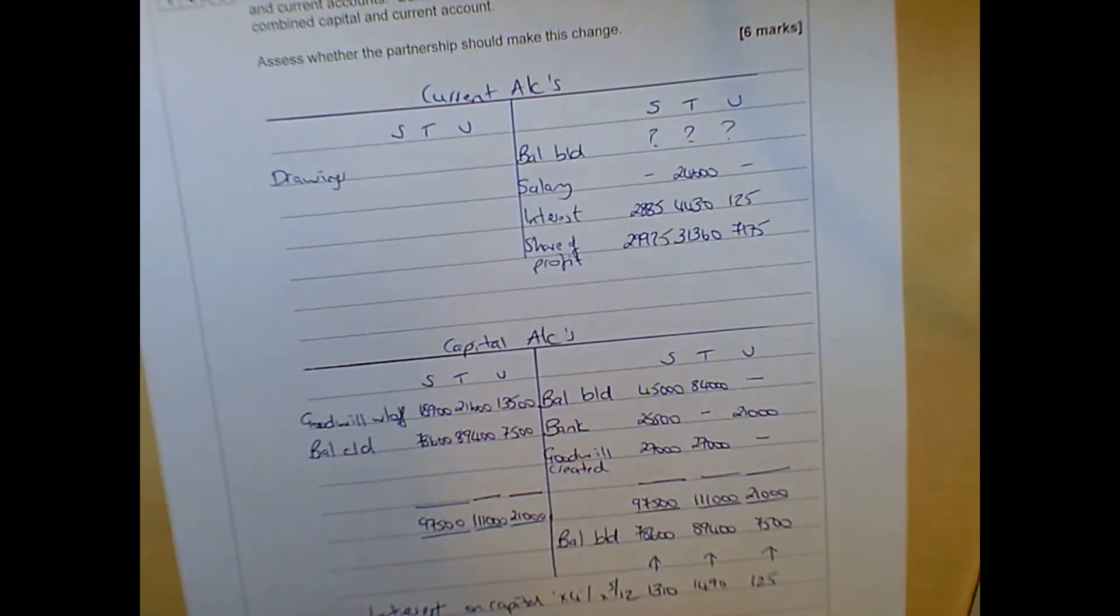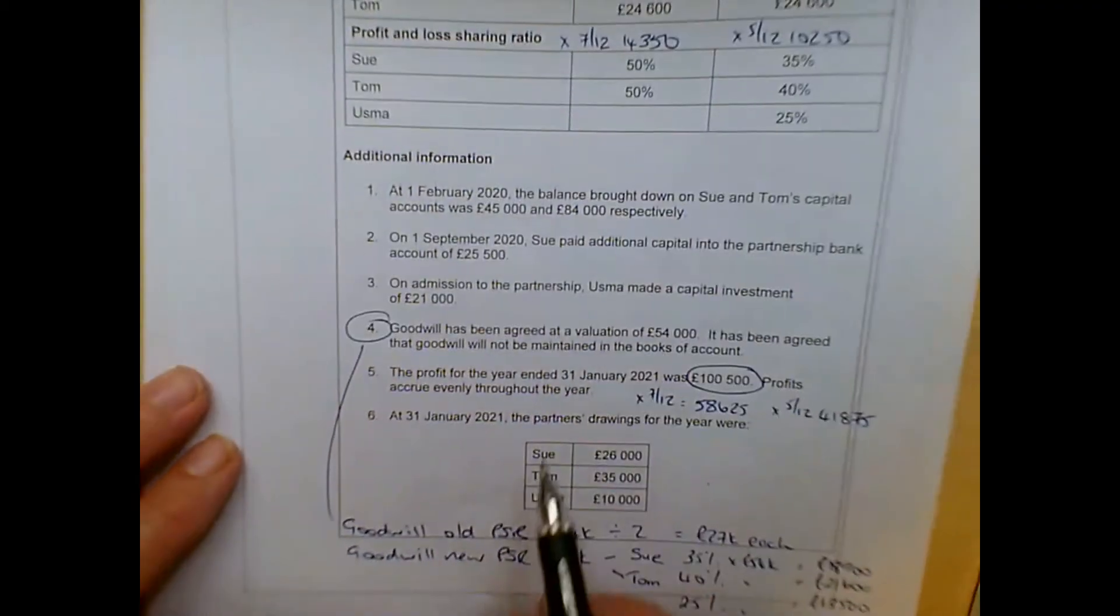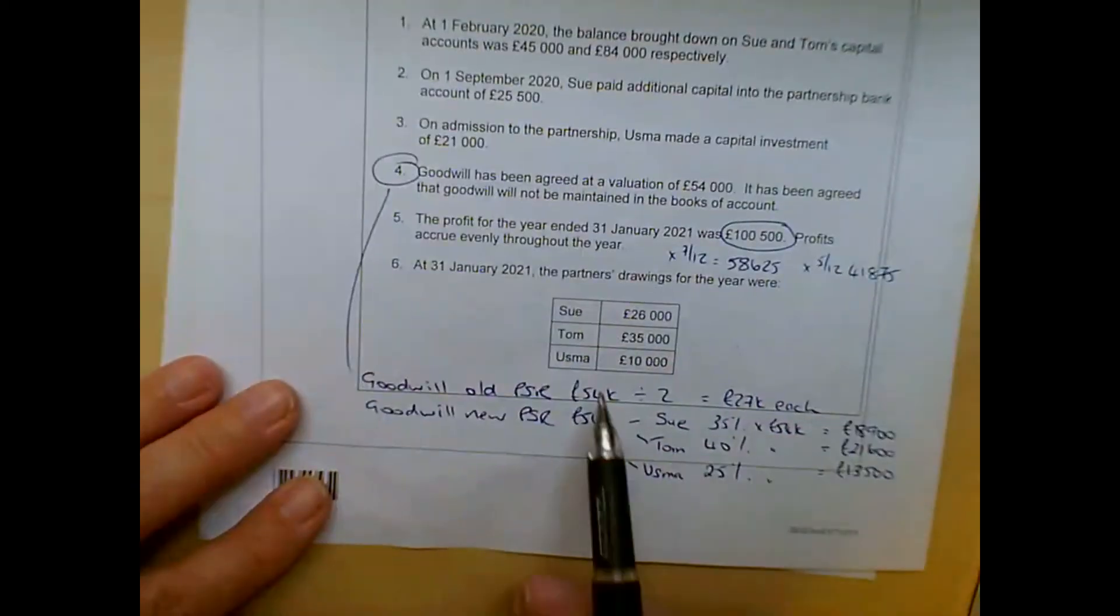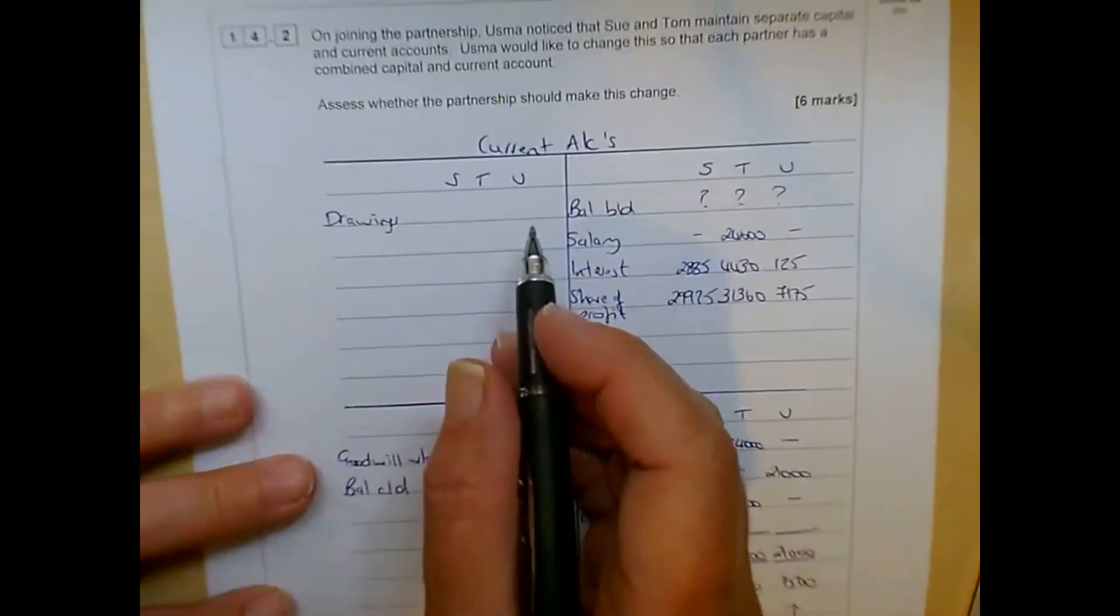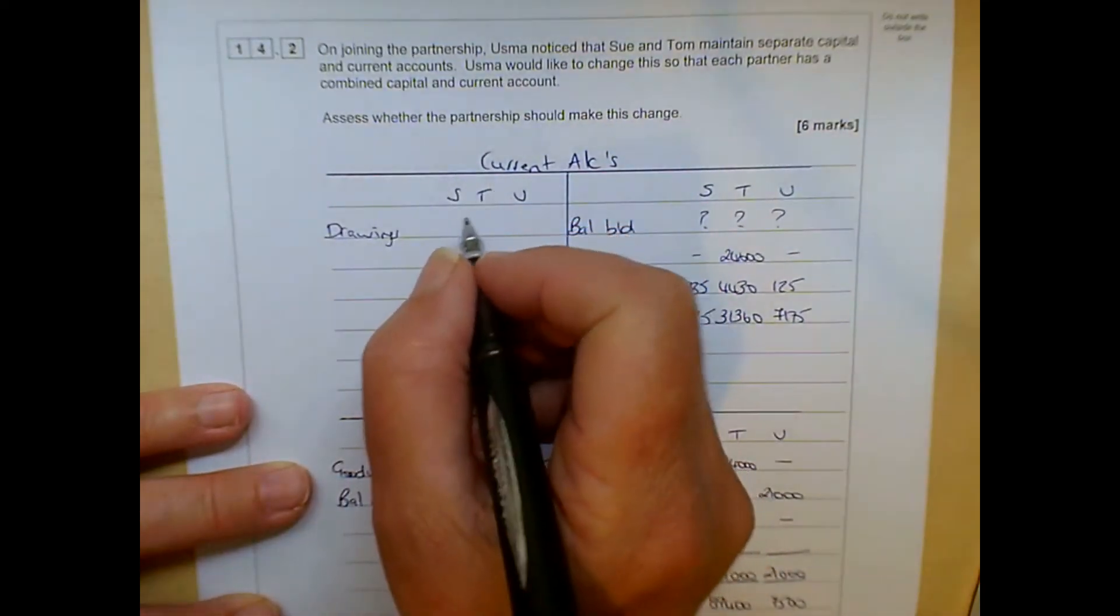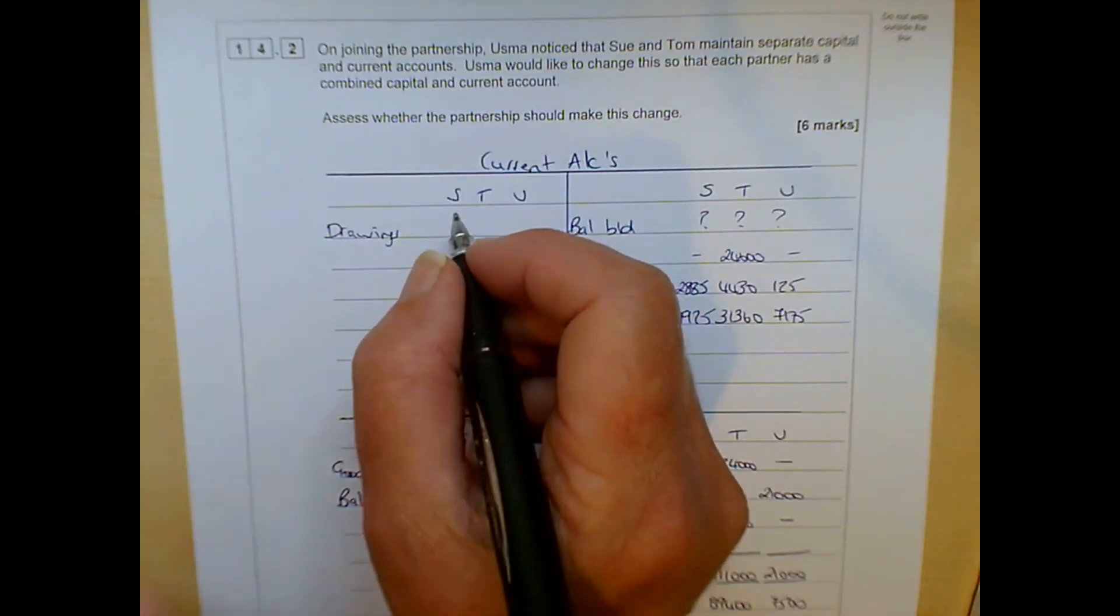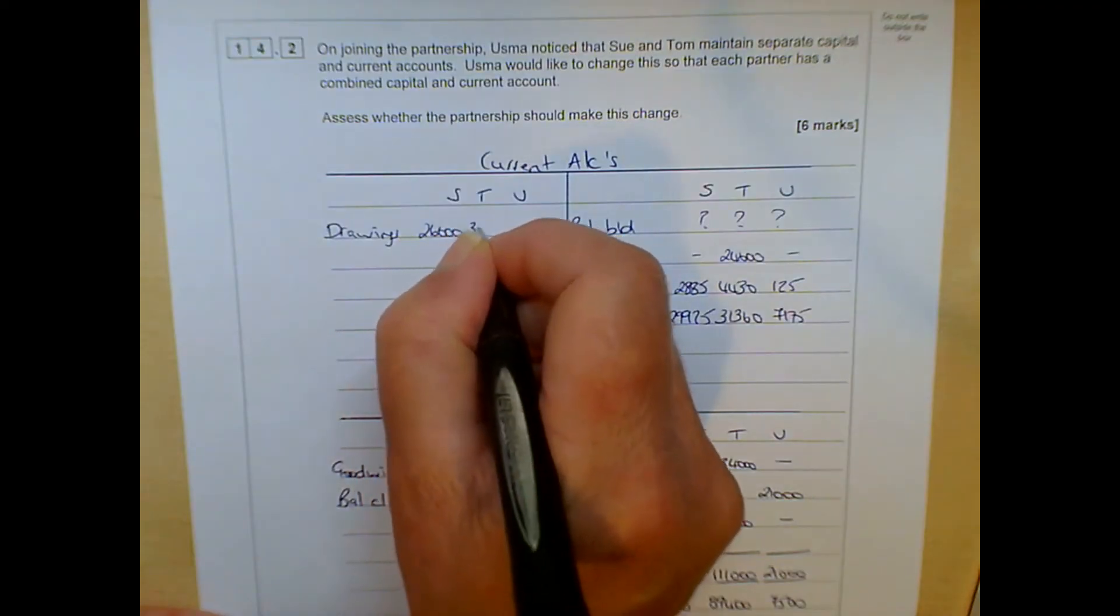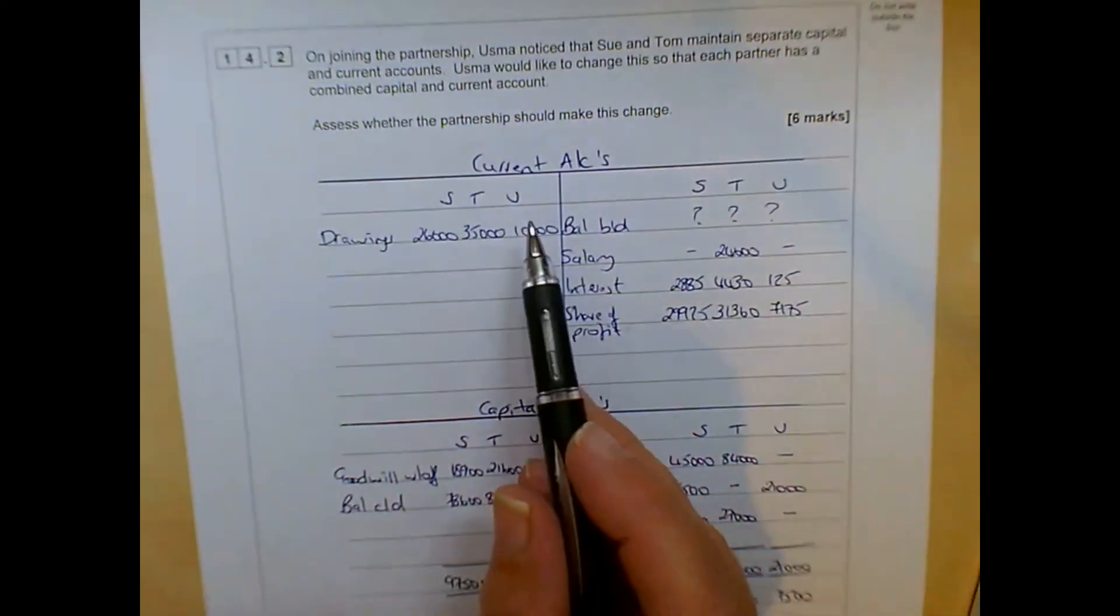And then if we pop the drawings, because I think we were given those. So the drawings here, down the bottom, £26,000, £35,000, and £10,000. That goes in on the debit side, so part of your dead click or whatever you do, pearls, or the drawings always going to be on the debit side. I never really understand how pearls works. One of my colleagues uses it, but I'm more of a dead click fan. So that's the drawings.